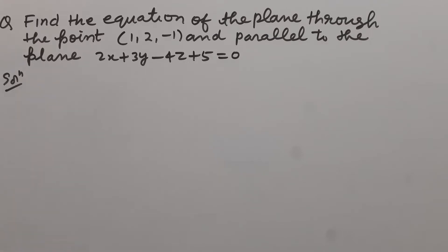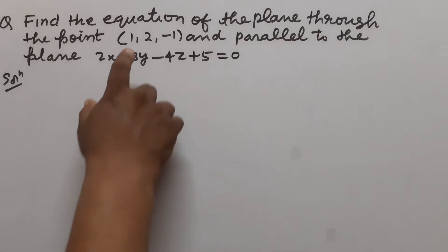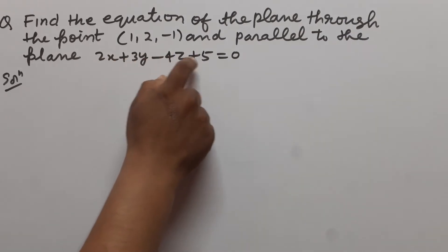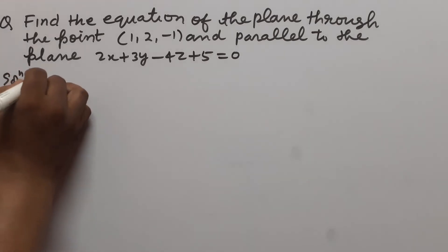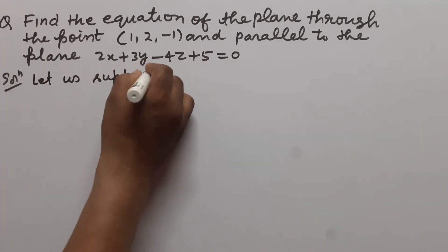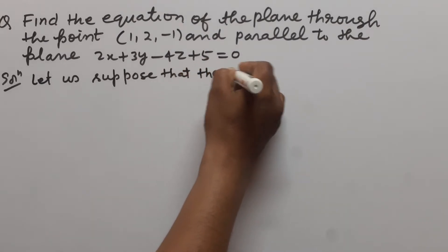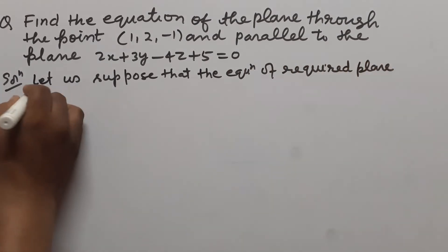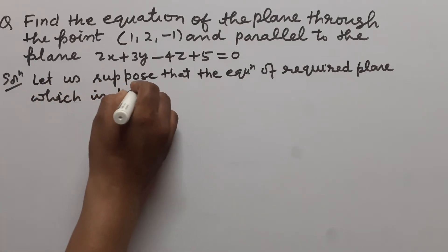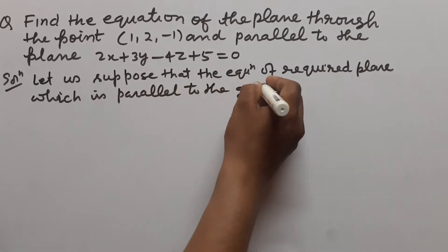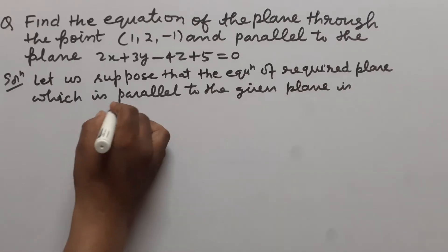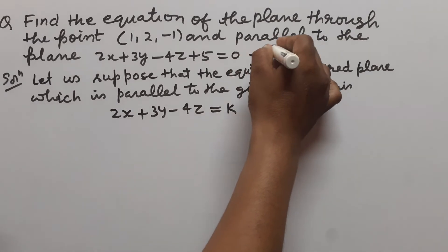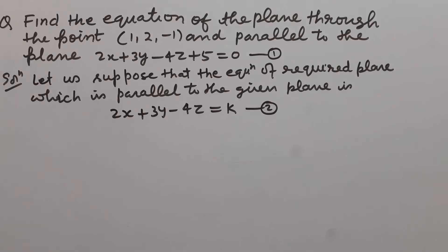So, we have to find here the equation of the plane. The required plane passes through the point (1, 2, -1) and is parallel to the given plane 2x + 3y - 4z + 5 = 0. Let us suppose that the equation of the required plane, which is parallel to the given plane, is 2x + 3y - 4z = k. Suppose this is plane 1 and this is the required plane 2, which is parallel to the given plane.